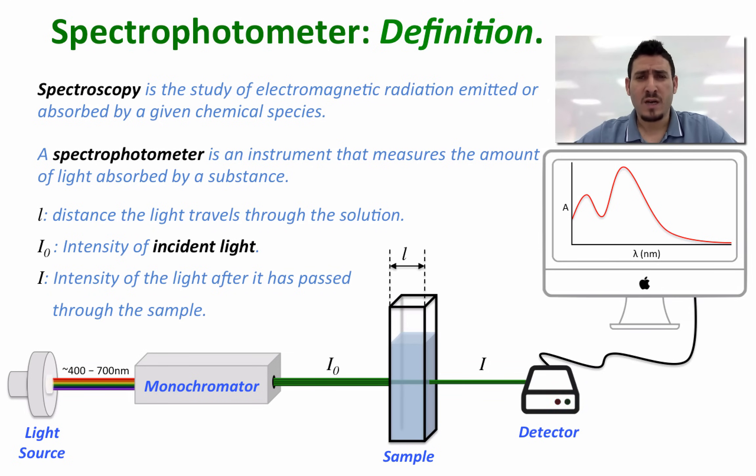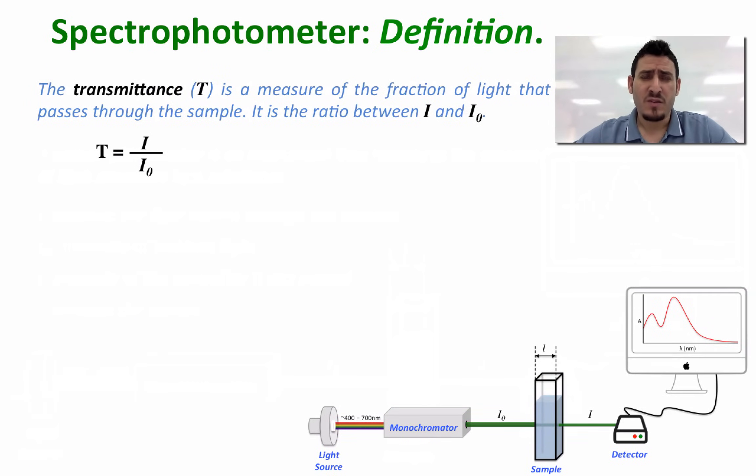Now how can we use i0 and i? The transmittance t is a measure of the fraction of light that passes through the sample. It's the ratio between i and i0, so t equals i divided by i0. The percentage transmittance can also be used, and percent t equals t multiplied by 100.